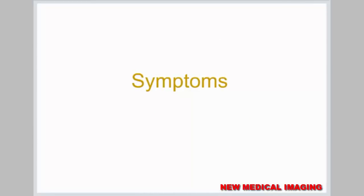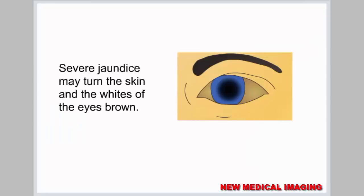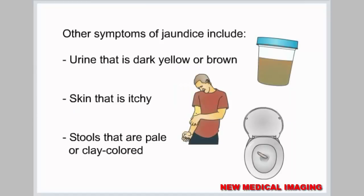Symptoms. Jaundice may appear slowly or begin suddenly. The most common symptom of jaundice is yellowing of the skin. The white part of the eyes may also turn yellow, as well as the inside of the mouth. Severe jaundice may turn the skin and the whites of the eyes brown. Other symptoms of jaundice include urine that is dark yellow or brown, skin that is itchy, and stools that are pale or clay-colored.